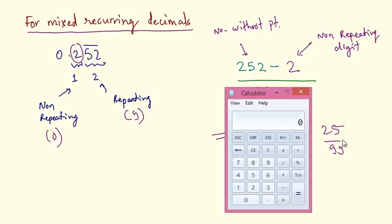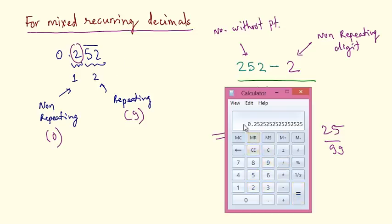Let's verify this fraction actually yields the decimal. Dividing 25 by 99 gives 0.2 with 52 repeating — 0.252525... — so our answer is correct.